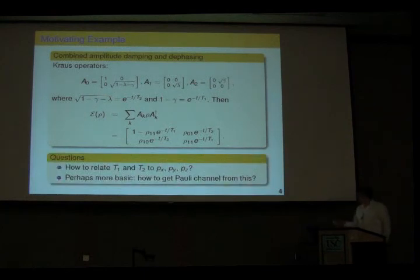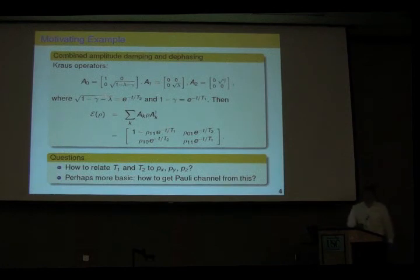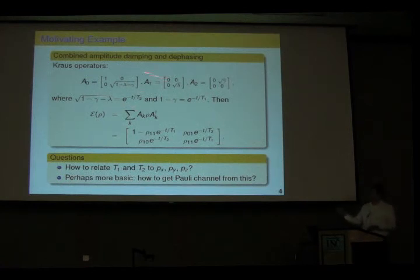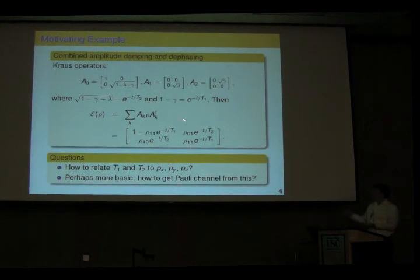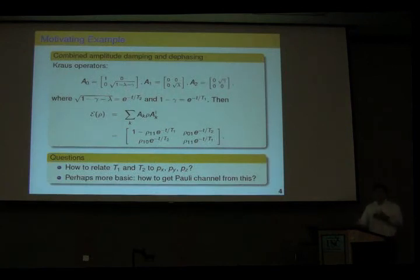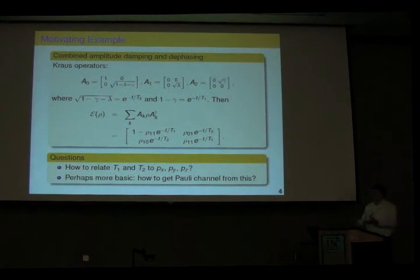How exactly are the probabilities of X, Y, Z errors related to this channel? I come from a background of stabilizer codes, where people work with the depolarizing channel. But here we have a channel which is not a depolarizing channel — it's not even a Pauli channel. The basic question is how can we map this to a Pauli channel? People have tried direct methods for this particular channel, but the route we take is to map it to a Pauli channel and see how the asymmetry in X and Z errors comes about.